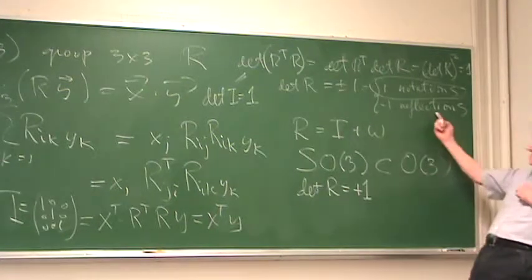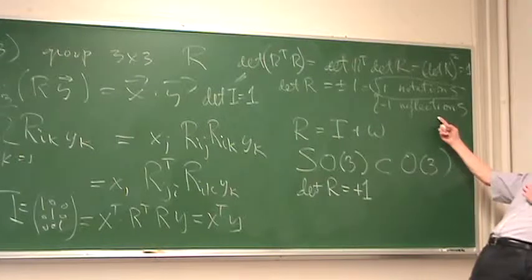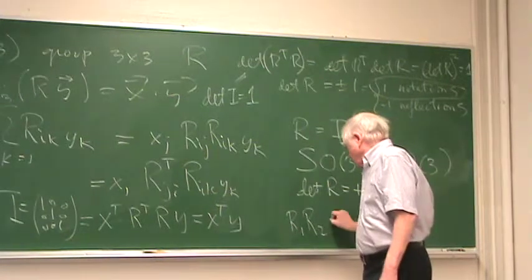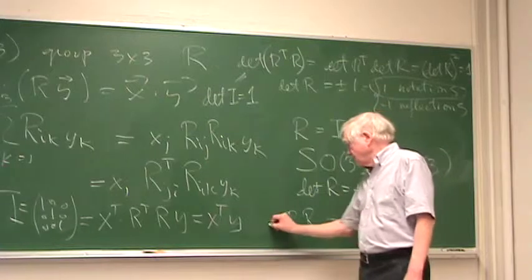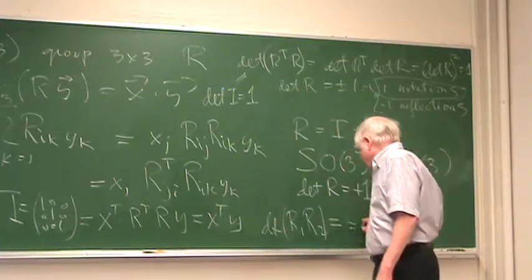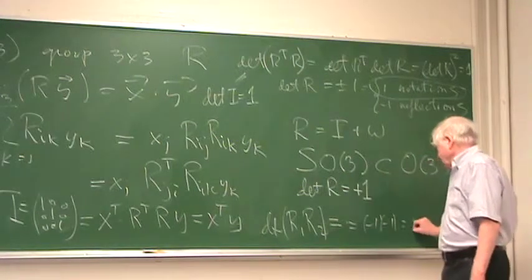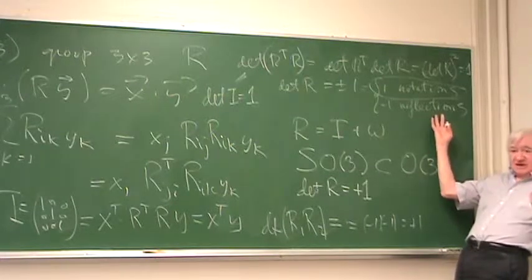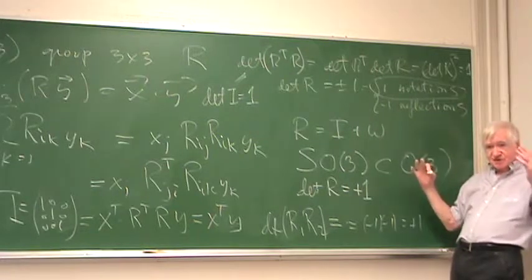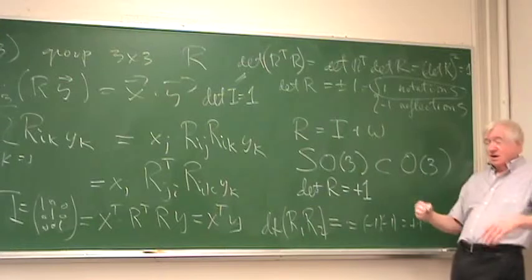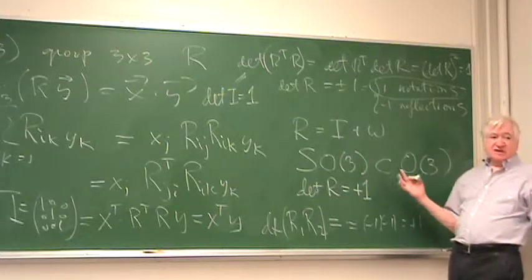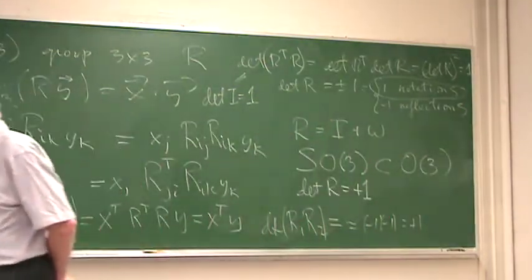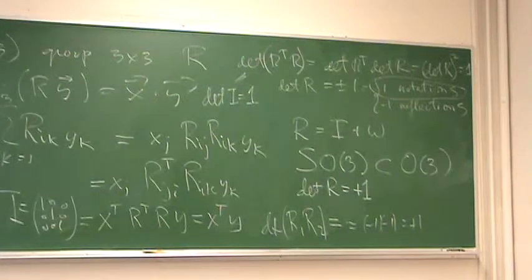Notice that the ones that have determinant of R minus one, they don't form a group, because if you have R_1 times R_2, this has determinant of minus one, and this has determinant of minus one. The determinant of the product is going to be minus one times minus one, which is plus one. So the ones that involve a reflection don't form a group. So there are two groups, SO3 and O3. O3 includes the reflections, but there's no restriction on the determinant, it could be plus or minus one. Whereas the ones with determinant of plus one, they form a group.